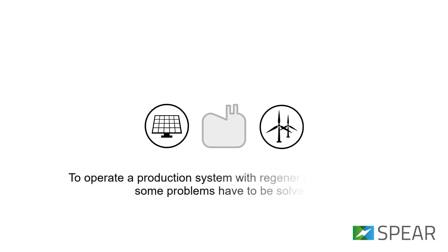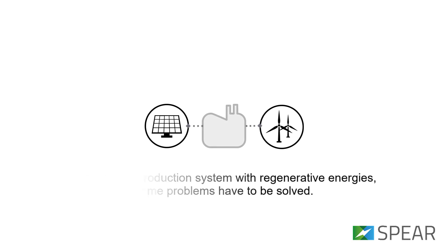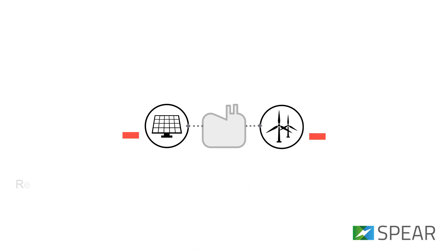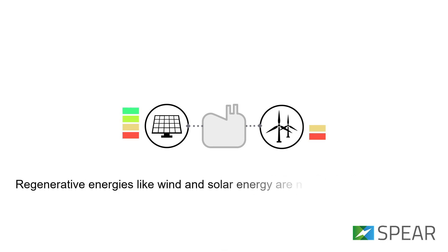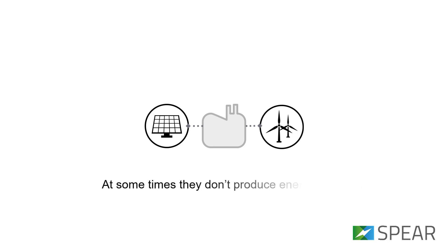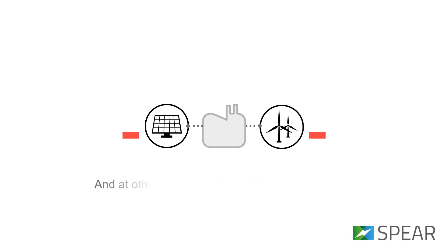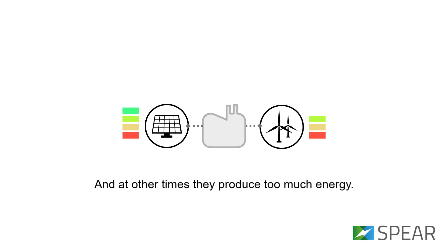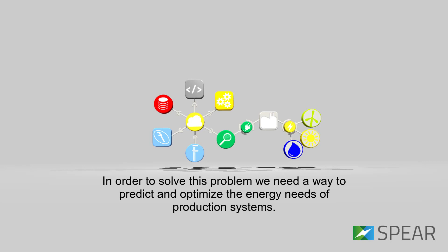To operate a production system with regenerative energies, some problems have to be solved. Regenerative energies, like wind and solar energy, are not accurately predictable. At some times, they don't produce energy at all. And at other times, they produce too much energy. In order to solve this problem, we need a way to predict and optimize the energy needs of production systems.